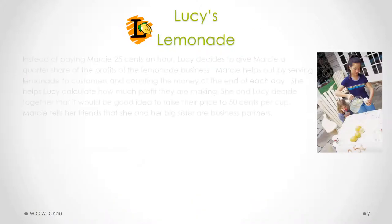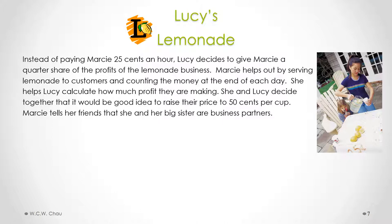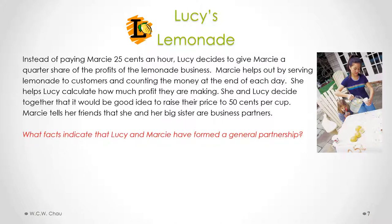Back to Lucy's Lemonade. Instead of paying Marcy 25 cents an hour, Lucy decides to give Marcy a quarter share of the profits of the lemonade business. Marcy helps out by serving lemonade to customers and counting the money at the end of each day. She helps Lucy calculate how much profit they are making. She and Lucy decide together to raise their price to 50 cents per cup. Marcy tells her friends that she and her big sister are business partners. The question is: what facts indicate that Lucy and Marcy have formed a general partnership? Please pause this video to consider this question.